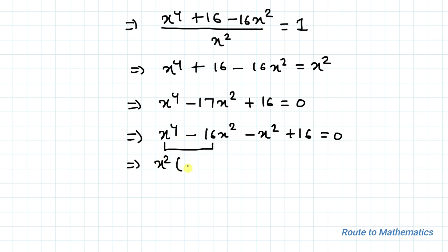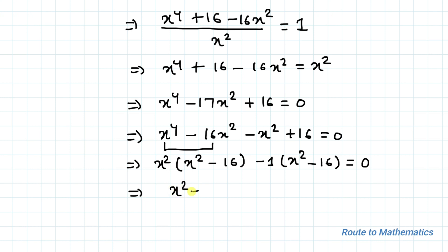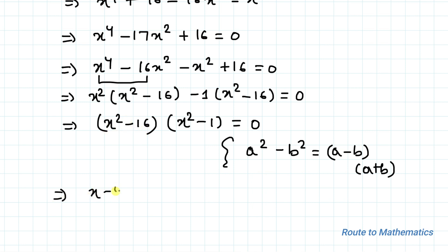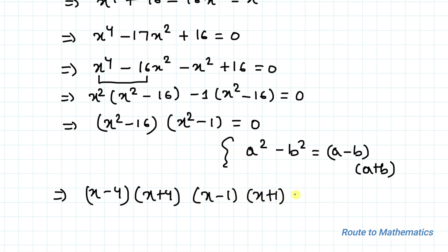Taking x² common from the first two terms gives x²(x² - 16), and taking -1 common from the last two terms gives -(x² - 16) = 0. So we get (x² - 16)(x² - 1) = 0. Applying the identity a² - b² = (a - b)(a + b), we write this as (x - 4)(x + 4)(x - 1)(x + 1) = 0.